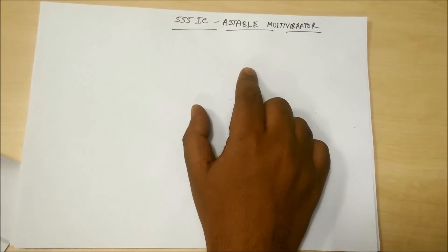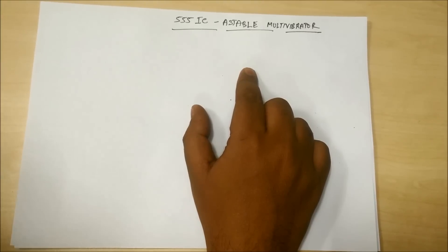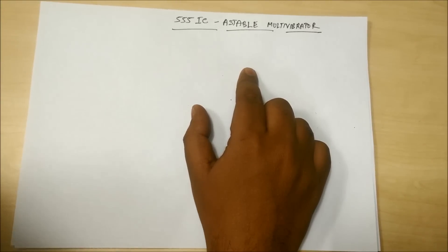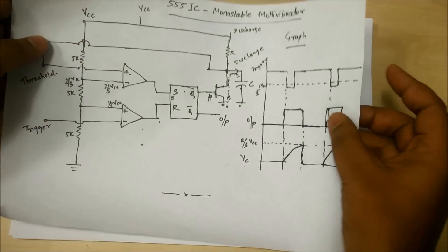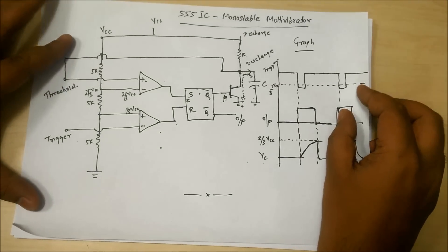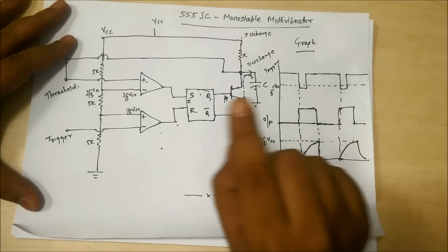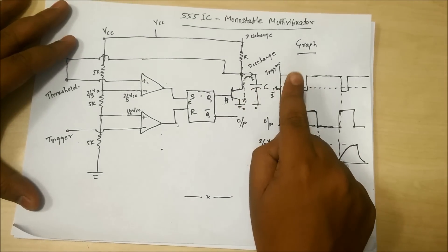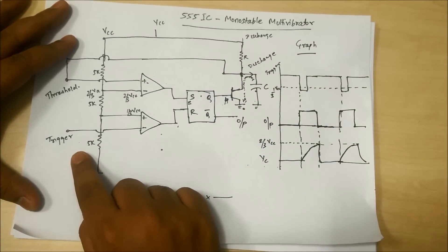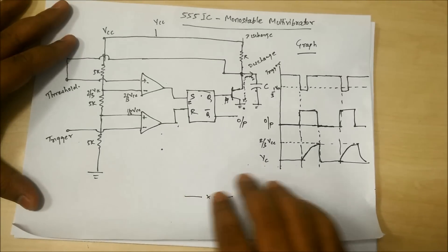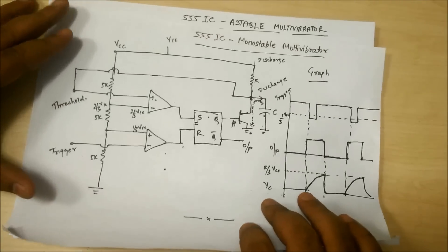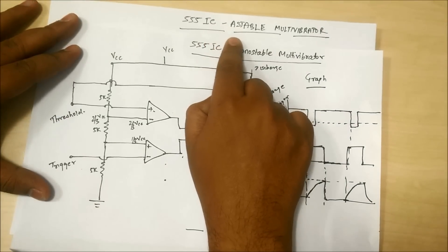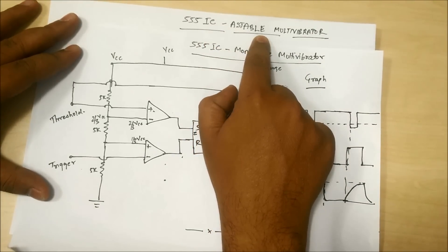In the previous lecture we understood the functioning of the 555 timer IC as a monostable multivibrator, where the circuit changed state only when the trigger input was applied. Now we are going to understand the 555 timer IC as an astable multivibrator.